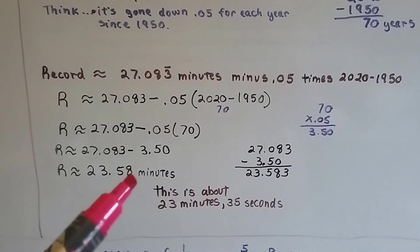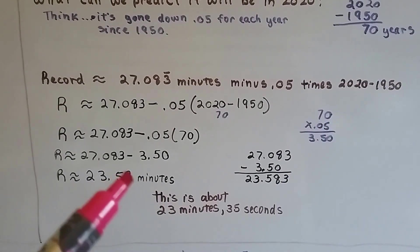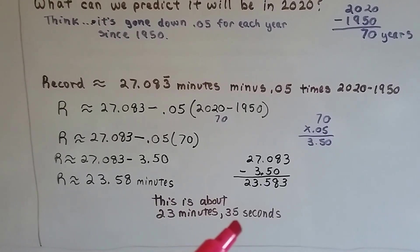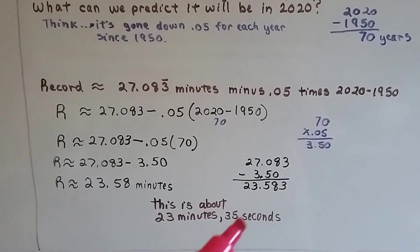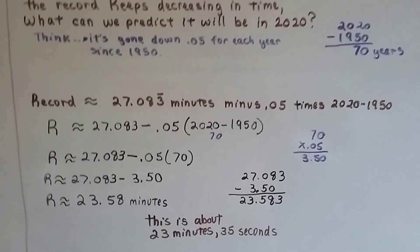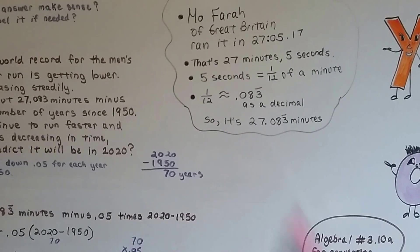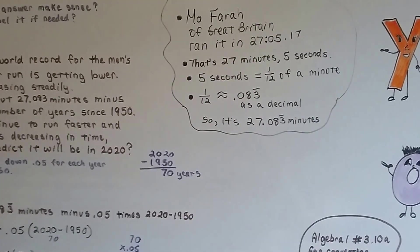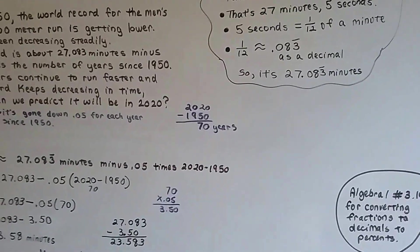27.083 minutes minus 3.5 is 23.583. So, we can say it's approximately 23.58 minutes. Now, .58 of a minute is not 58 minutes or 58 seconds. 50 is about half, isn't it? This is about 23 minutes and 35 seconds. .58 of a minute is about 35 seconds. So, I know this might seem really confusing, but if you think about what 1 12th is as 5 seconds, that's how we got this .083 because 5 seconds is 1 12th of a minute.